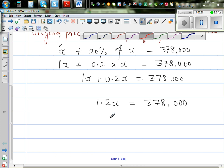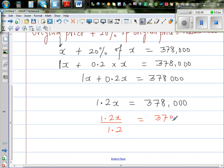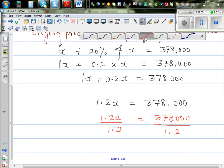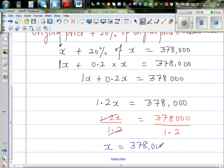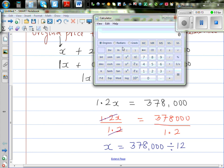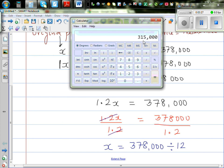I want to get x. I'm going to divide both sides by 1.2. So 1.2x divided by 1.2 is equal to 378,000 divided by 1.2. These 1.2s get cancelled. So your final answer is x is equal to 378,000 divided by 1.2. You can use a simple calculator, so 378,000 divided by 1.2 equals 315,000.